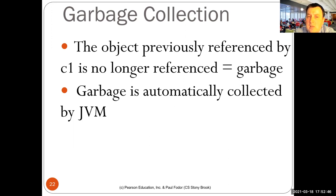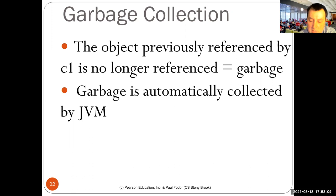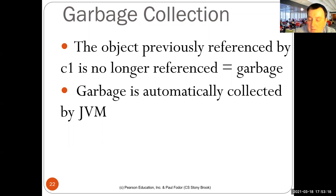Having an automatic garbage collector was a big improvement. Before that, you would have memory leaks — objects created but never deallocated. In C, for creating a structure or array you would have to allocate space with malloc and then free it. In C++, there were the new and delete operators, so you had to explicitly delete objects. Java got rid of explicit deletion — it's done automatically by the system.